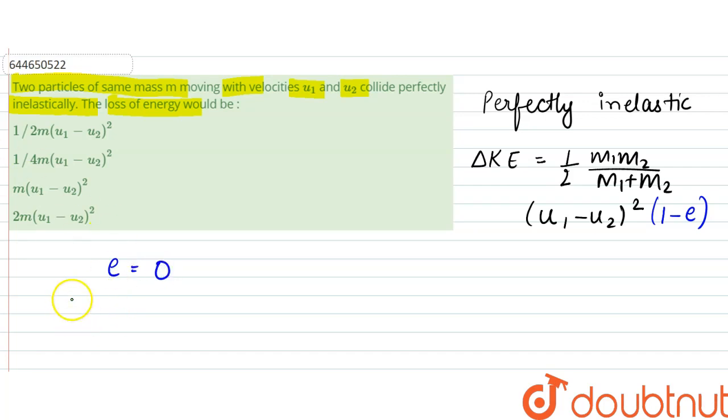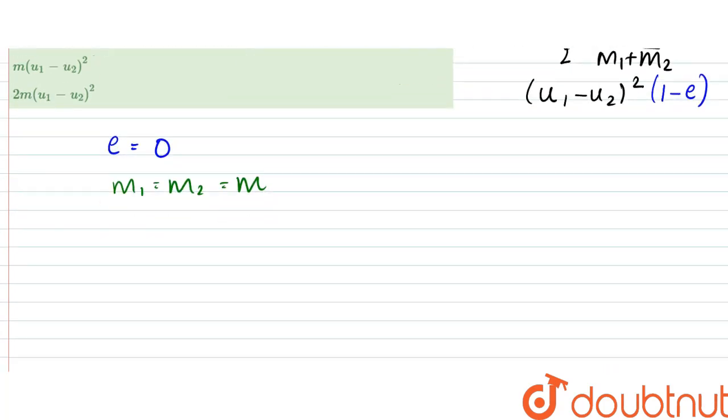is equal to 0. Therefore, and also we are given that both the masses are same, that is m1 equals m2 equals m. So therefore delta kinetic energy would be equal to 1 by